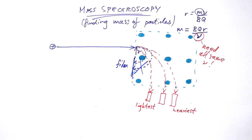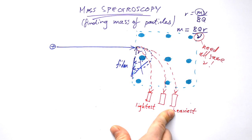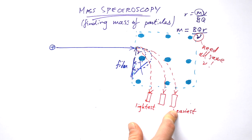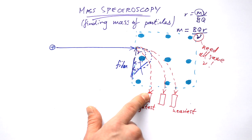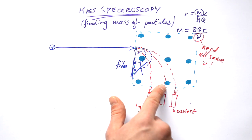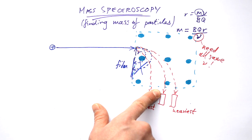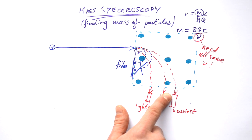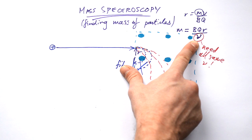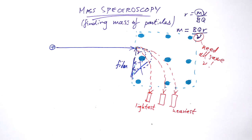Using a film isn't the best method because you can't tell relative abundance — you can't count how many of each particle you have. A better approach is to have sensors precisely lined up for specific radii of curvature for certain ion masses. For example, three sensors could detect iron-55, iron-56, and iron-57 separately, allowing you to count how many of each ion hits each detector and find their relative abundance. The problem is that for this to work, all ions need to have the same speed regardless of their mass.